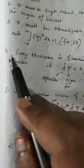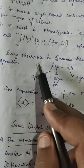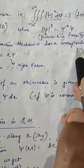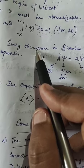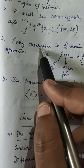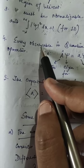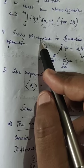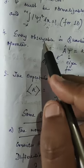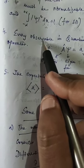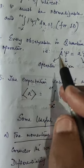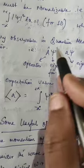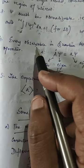Next, the fourth postulate: every observable in quantum mechanics has a corresponding operator. An observable is something which can be measured — like position, momentum, energy, angular momentum. All these are observable quantities which can be measured, and they each have a corresponding operator in quantum mechanics.